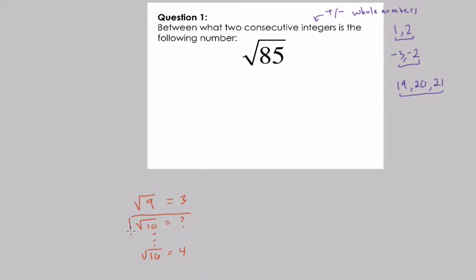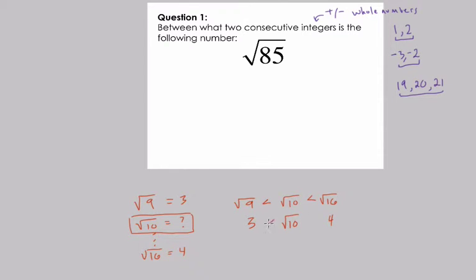So this tells us that the square root of 10, whatever it is, is less than the square root of 16 and larger than the square root of 9. If we simplify the square root of 9 and the square root of 16, we get 3 and 4. So we can answer this question by saying the square root of 10 is larger than 3 and less than 4 — it's between those two consecutive integers. You might also be asked what integer is closest to it. The square root of 10 is much closer to 3 because 10 is very close to 9. It's closer to 9 than it is to 16: 10 is 6 away from 16 but only 1 away from 9, so it's closer to the square root of 9, which is 3.